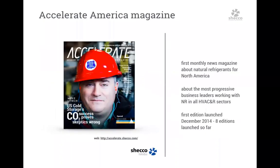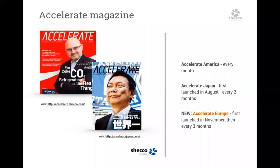The Guide North America is part of the Accelerate brand. We launched the Accelerate magazine last year, first for the North American market, focusing on end users, with 8 editions launched so far. Following the success of the North American edition, we launched one in Japanese for the Japanese market. We are also excited to announce a European magazine launching in November for the first time, appearing every quarter.